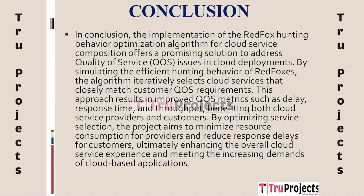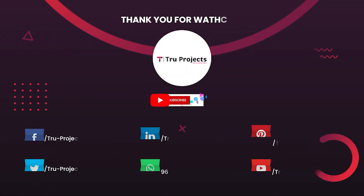The final conclusion of the project is that the implementation of the Red Fox hunting behavior optimization algorithm for cloud service composition provides a viable method for dealing with quality of service issues in cloud deployments. The system iteratively selects cloud services that closely fit client QoS needs by imitating the efficient hunting behavior of red foxes. This method improves QoS measures including delay, response time, and throughput, benefiting both cloud service providers and customers. The project's goal is to optimize service selection in order to reduce resource consumption for providers and response times for users, thereby improving the overall cloud service experience.